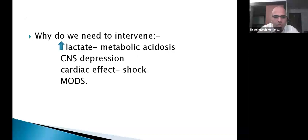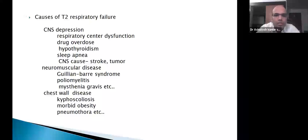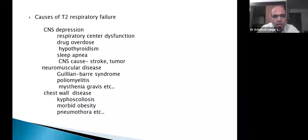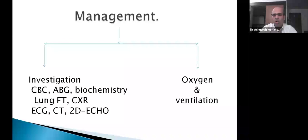Causes of Type 2 respiratory failure can be divided into CNS depression, neuromuscular disease, and chest wall disease. CNS depression includes drug overdose, hypothyroidism, sleep apnea, stroke, and tumors. Peripheral neuromuscular disorders include Guillain-Barré syndrome, poliomyelitis, and myasthenia gravis. Chest wall diseases such as kyphoscoliosis, morbid obesity, and pneumothorax cause hypercapnic or ventilatory failure with increased PaCO2.